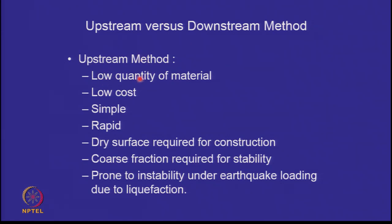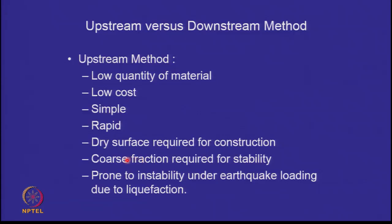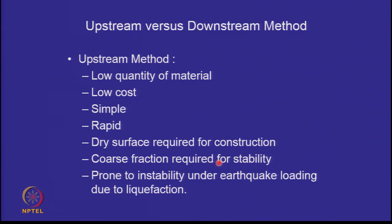Upstream method requires low quantity of material and is therefore low cost, simple, and rapid — faster because less material has to be placed. However, it requires a dry surface for construction, so you cannot construct it when the pond is operational. You must have two ponds available: one operational, one drying. For stability of the upstream method, you want the coarser fraction of tailings towards the peripheral embankment so that the raising is on the coarser fraction. Coarser fractions, even when loose, are stronger due to larger particle size and are free-draining, avoiding poor pore water pressure build-up.